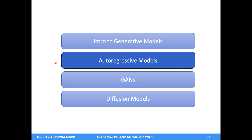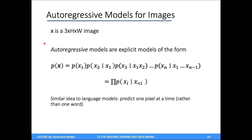Our first example of a deep generative model is autoregressive models, which are explicit deep generative models. We use the chain rule of probability: the probability of an image X equals the probability of the first pixel times the probability of the second pixel given the first, times the probability of the third pixel given the first two, and so on. To assign a probability to an entire image, I assign a probability to each individual pixel and multiply them together — this equality always holds by the laws of probability.